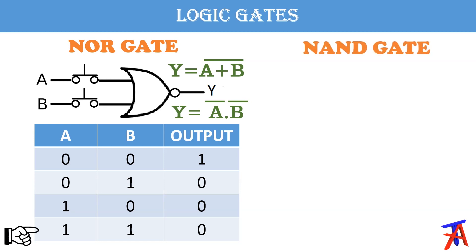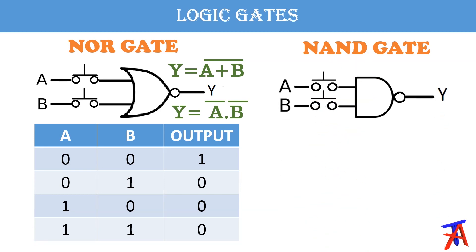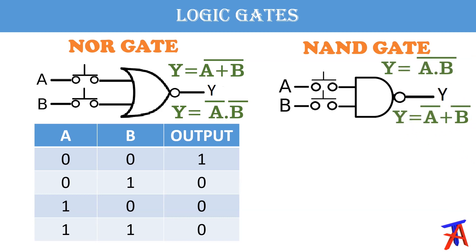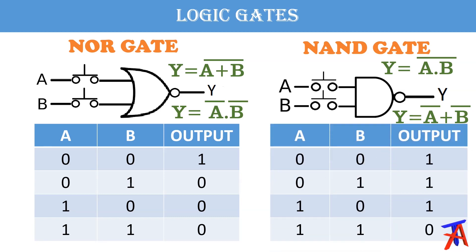There is another universal gate which is called the NAND gate. Here is the diagram of the NAND gate. It is also the complement of the AND gate — NOR gate is the complement of OR gate, and NAND gate is the complement of AND gate. The formula is y equals a dot b, whole bar, and we can also write it as y equals a-bar plus b-bar. Here is the truth table of the NAND gate, shown as the complement of the AND gate.